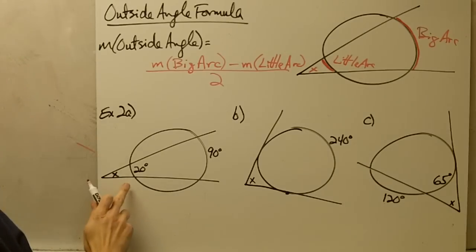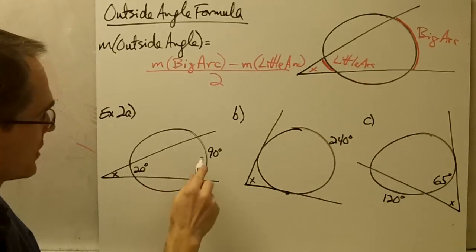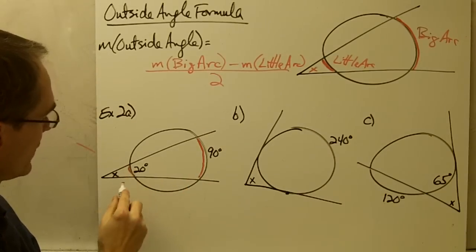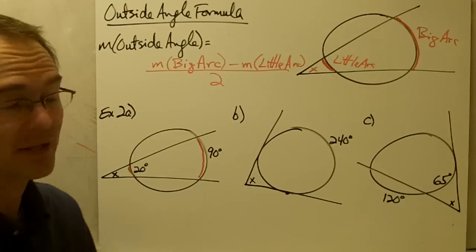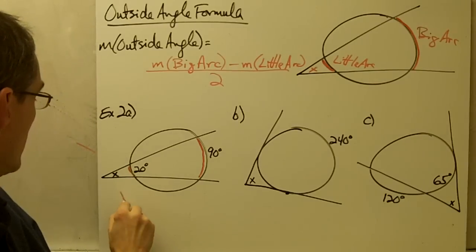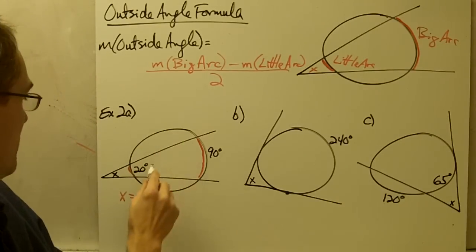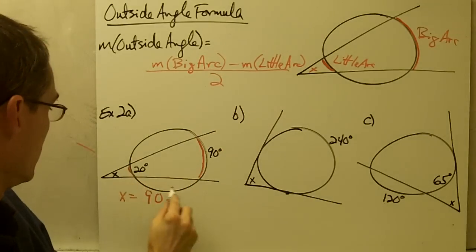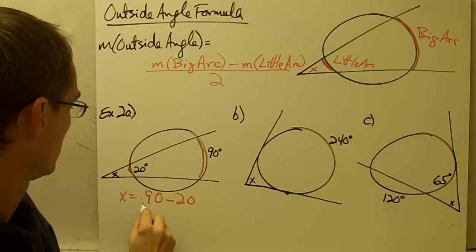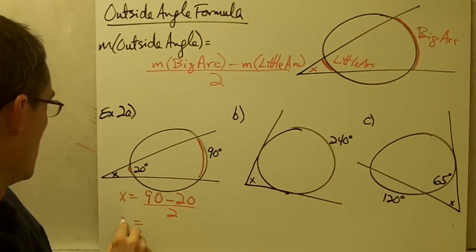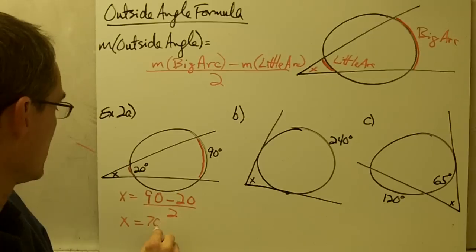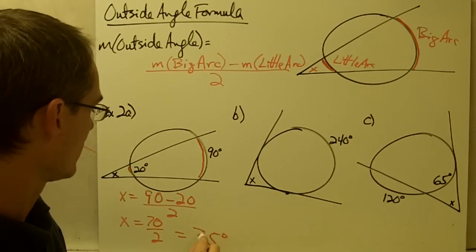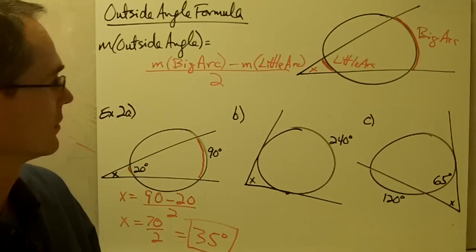Example 2a: this picture looks like the formula diagram. Here's my big arc — 90 degrees — and here's my little arc — 20 degrees — and here's the angle I'm looking for. Plugging into the formula: x equals 90 minus 20, divided by 2. That gives me 70 divided by 2, which is 35 degrees.